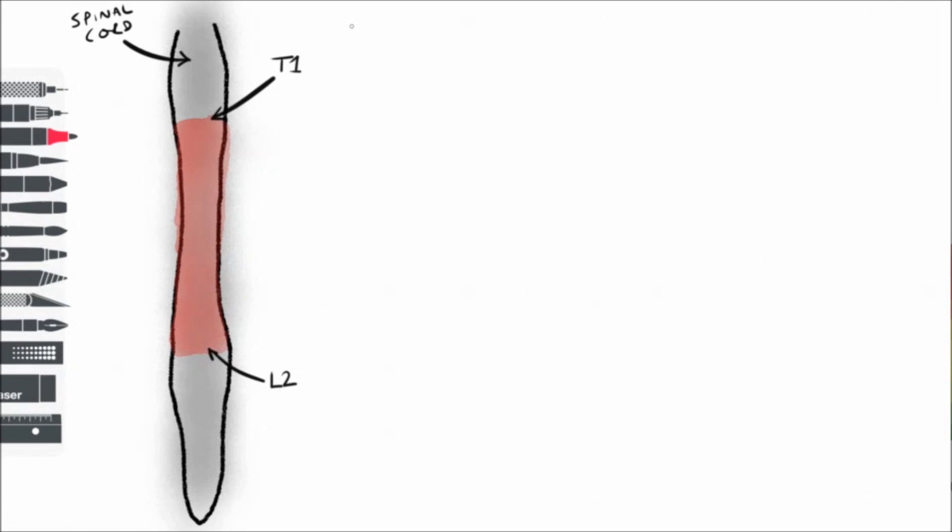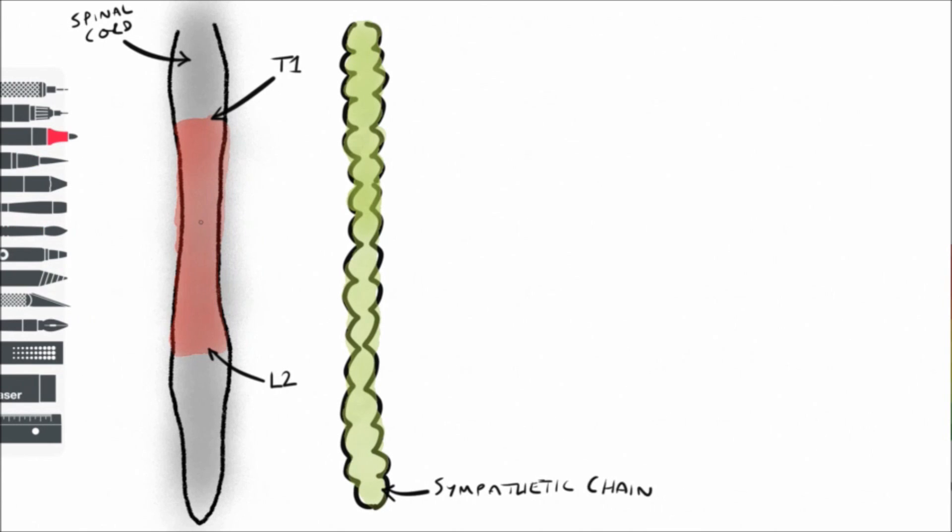The main site of synapse between pre- and postganglionic fibers is the sympathetic chain, a collection of ganglia that run up the length of the body, either side of the vertebral bodies. Preganglionic fibers enter the sympathetic chain and then synapse with postganglionic fibers which then exit and make their way to the effectors.